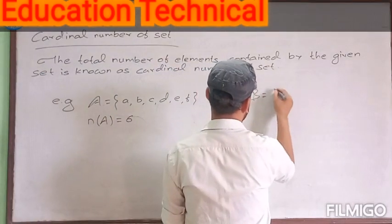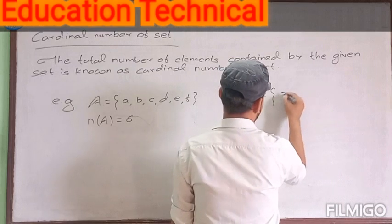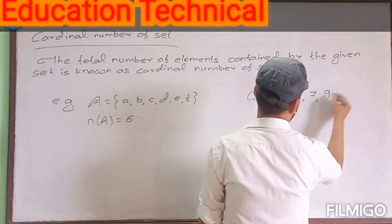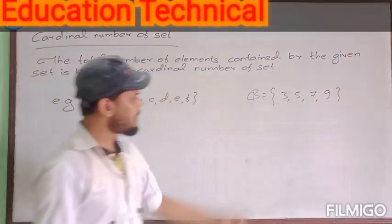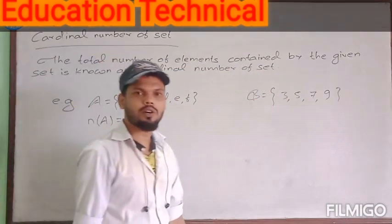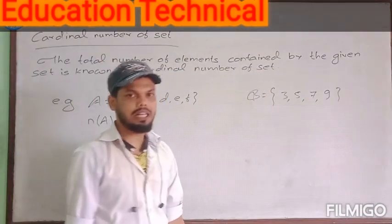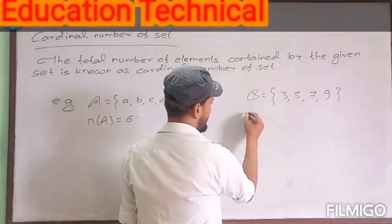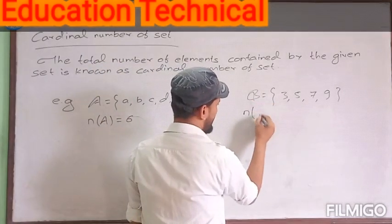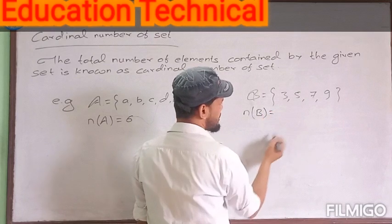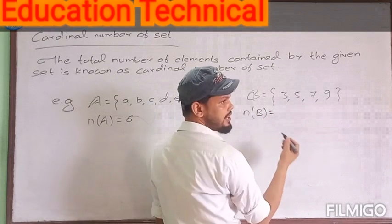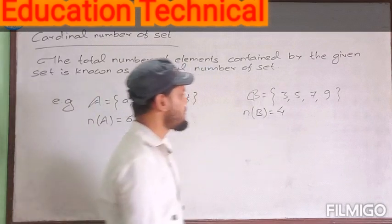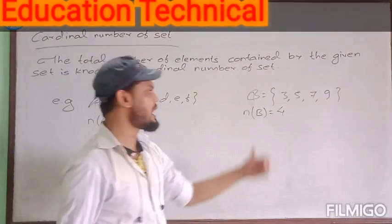For another example, suppose set B has the elements 3, 5, 7, 9. We can easily count the total number of elements contained by set B. So the cardinal number of set B equals 1, 2, 3, 4 — that is 4.